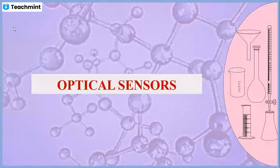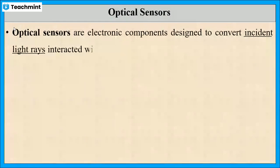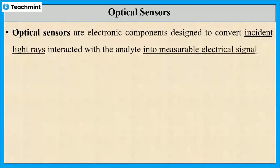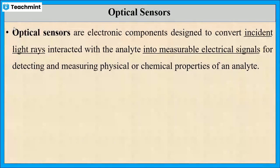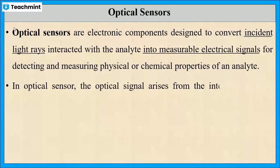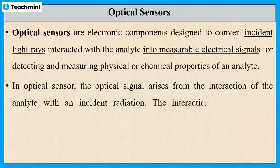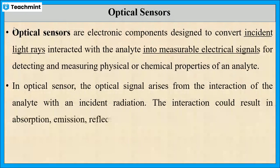In this session, I will explain about optical sensors. Optical sensors are electronic components which are designed to convert incident light that is interacted with the analyte into electrical signals. These signals help to detect the physical or chemical properties of the analyte. Whenever an electromagnetic radiation such as UV, visible, or IR interacts with the analyte,